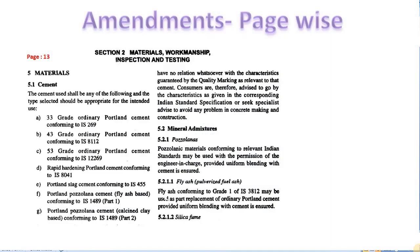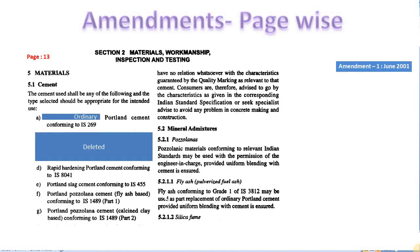In page number 13, Section 2, some amendments are there. In between these pages, there are some amendments like printing mistakes only, which can be checked in the PDF provided in the description box. Here in this page, changes are made in the grade of concrete. In the 1st amendment, the word '33 grade ordinary' was changed to 'ordinary Portland cement' without mentioning the grade number. Likewise, subclasses mentioning the 43 and 53 grades were deleted.